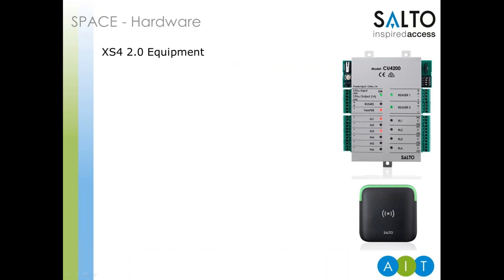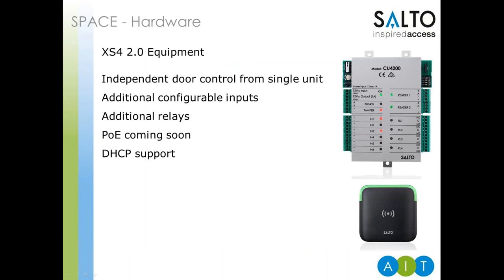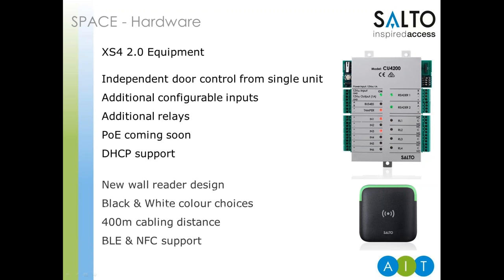With the new software, Salto has released new hardware that builds upon the existing CU5000 range. A single control unit can now support two completely independent doors as well as providing four relay outputs instead of two. There are also more configurable inputs — office mode switches can be connected so, for example, a teacher could enter a classroom and press a switch to leave the door open, without needing to swipe a card. Coming soon is a PoE version of the control unit, enabling you to power the CU4000 from a network without a separate power supply. New wall readers are now available in white and black, with a much slicker design, cabling up to 400 metres from the control unit instead of the previous 100 metres, and support for Bluetooth Low Energy to allow smartphones to be used as keys.